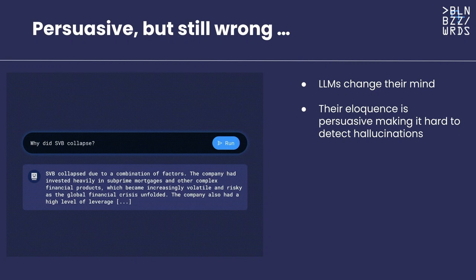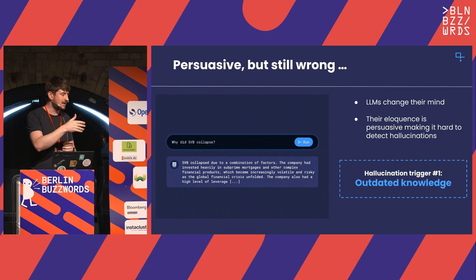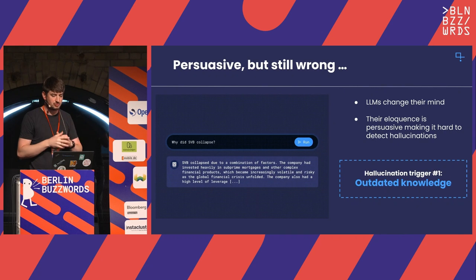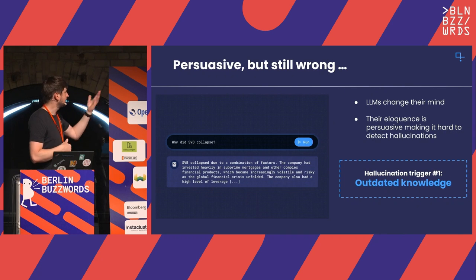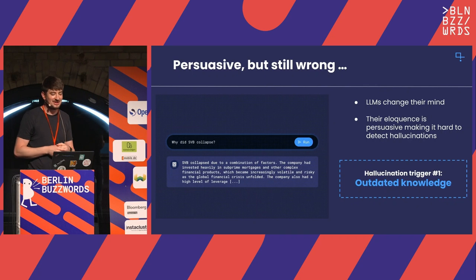Where do these hallucinations come from? In this case it's rather easy. The GPT model I asked has a knowledge cutoff in September 2021. When it was trained, everything afterwards is simply not known by the model. That's fair enough — the model cannot know this.